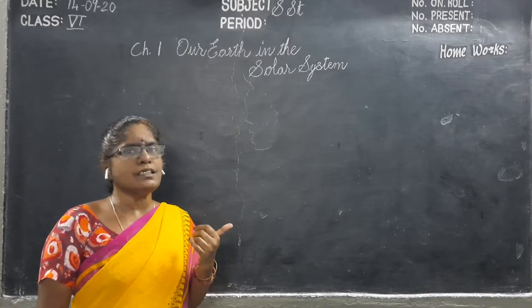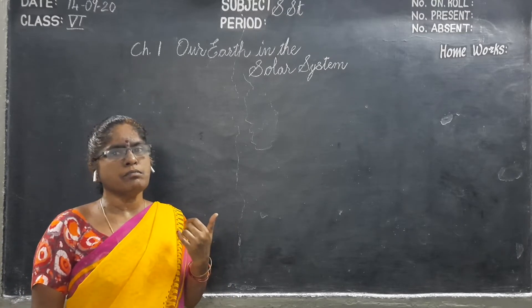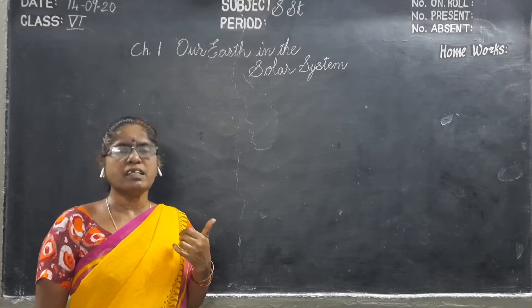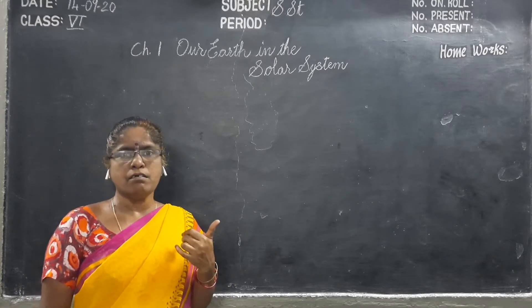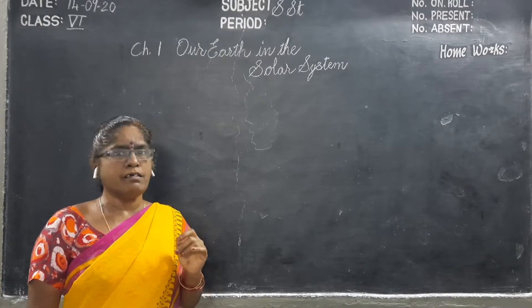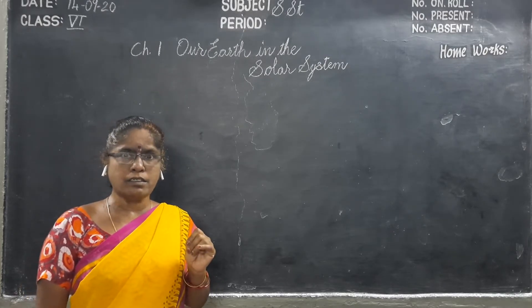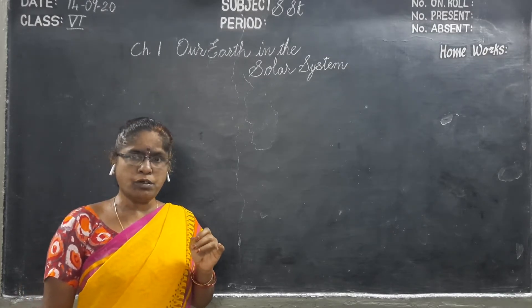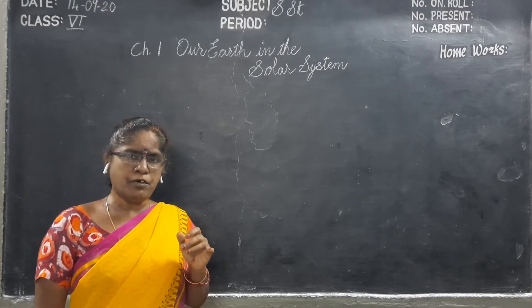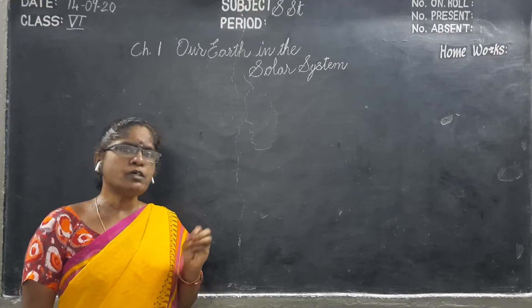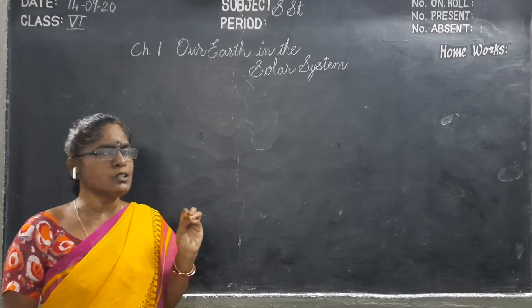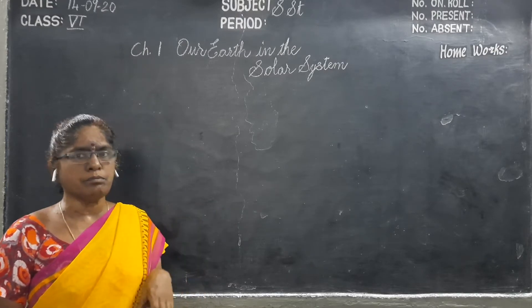What is the solar system? The sun, planets and its satellites, asteroids, meteoroids — all together we call as the solar system.